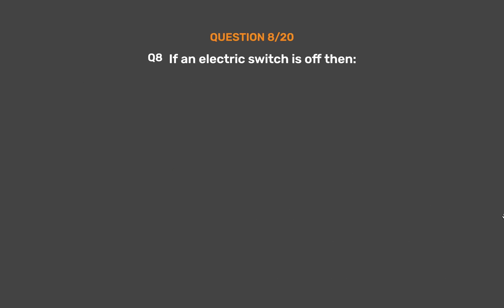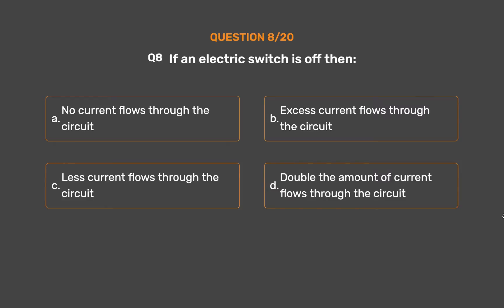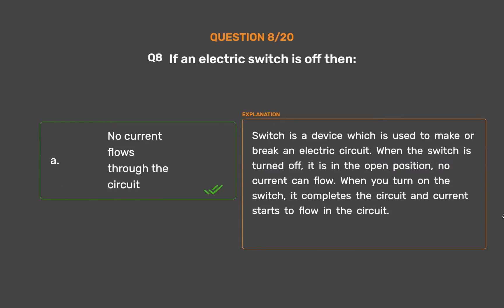Question number 8. If an electric switch is off, then: Option A: No current flows through the circuit. Option B: Excess current flows through the circuit. Option C: Less current flows through the circuit. Option D: Double the amount of current flows through the circuit. The correct answer is Option A, No current flows through the circuit. A switch is a device which is used to make or break an electric circuit. When the switch is turned off, it is in the open position and no current can flow. When you turn on the switch, it completes the circuit and current starts to flow.